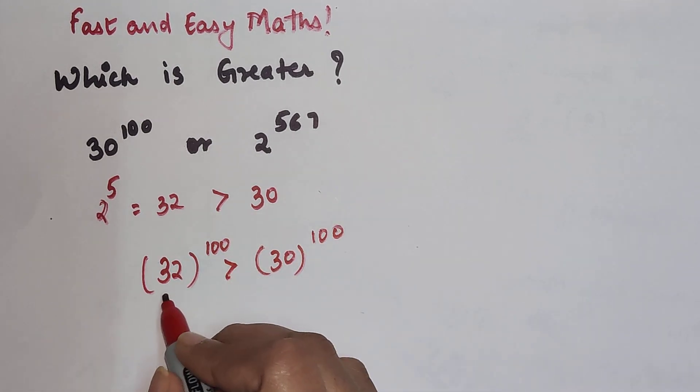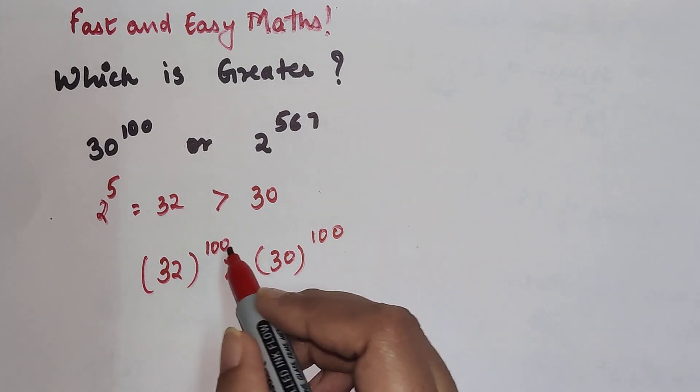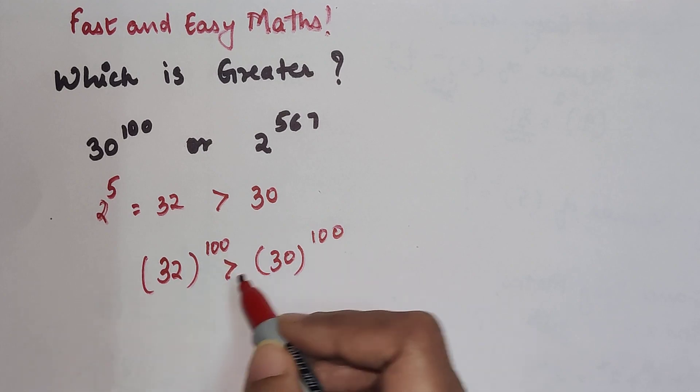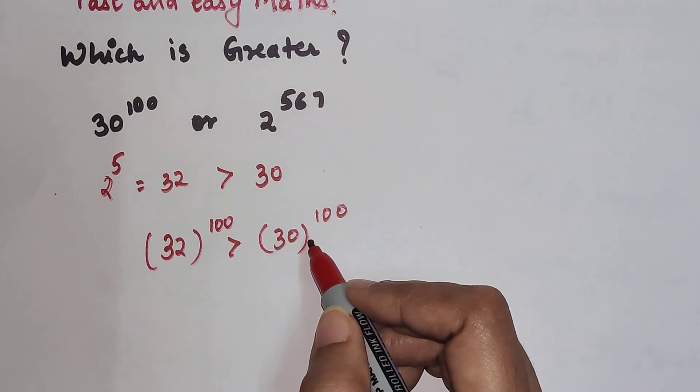So now see, since base itself is greater and they are raised to the same index, I can say that 32 raised to 100 will be still greater than 30 raised to 100.